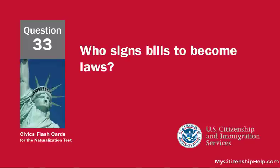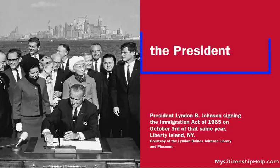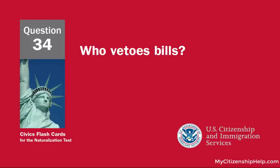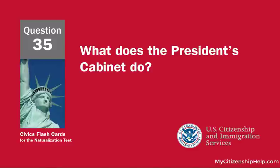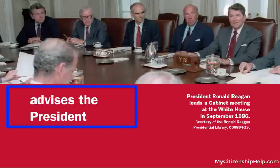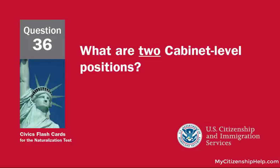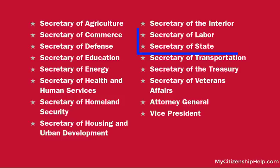Who signs bills to become laws? The president. Who vetoes bills? The president. What does the president's cabinet do? It advises the president. What are two cabinet-level positions? Secretary of labor and secretary of state.